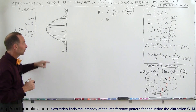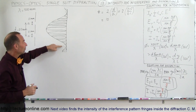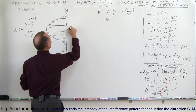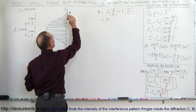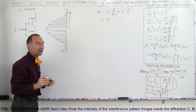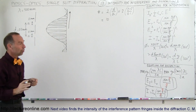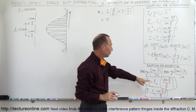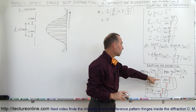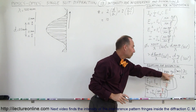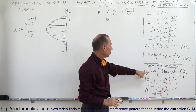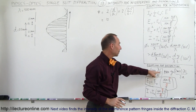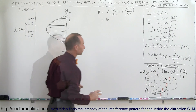To show how that works, we're first going to find the location of the first minimum of the diffraction pattern. To do that, we use the concept where y for the minimum can be found as 2 times m times lambda times L divided by 2a.